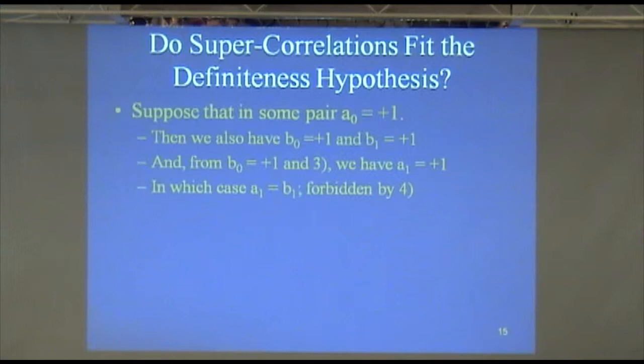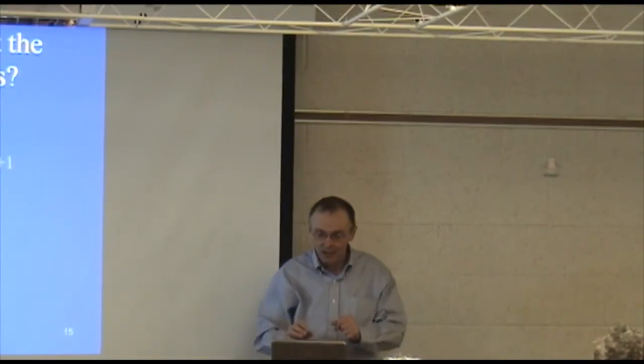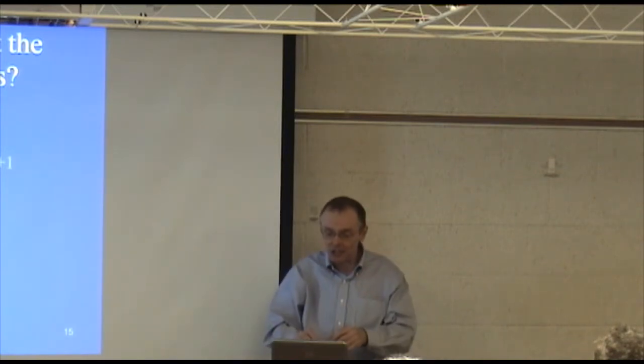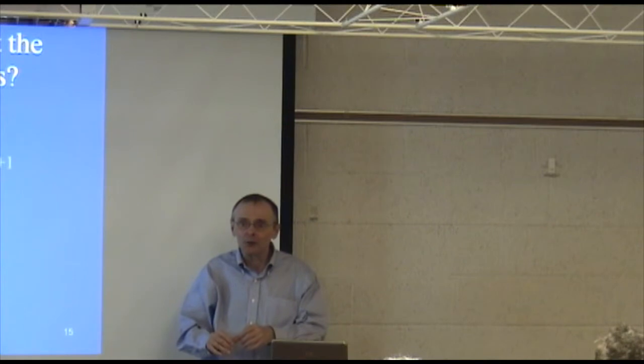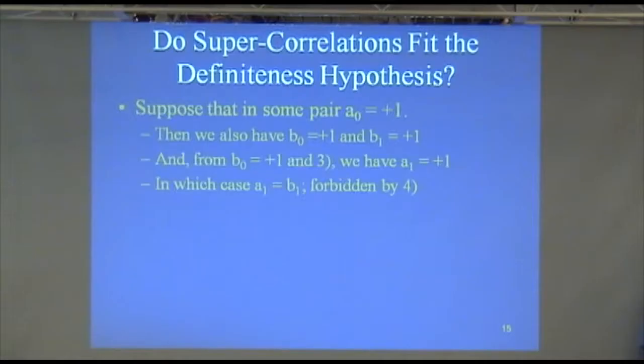But it also means that his B1 value has to be plus 1. If you just go back to that earlier slide, it'd be a little easier to see. Unfortunately, I can't show them both at once. But then, since Bob has a plus 1 for his B1, actually, sorry, that's not what I meant to say. Because Bob has a plus 1 for his B0, then our third principle about the A1, B0 case says Alice has a plus 1 for A1. Now you get the kicker. A1 would equal B1.